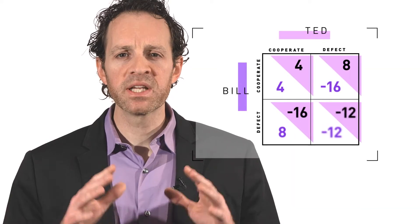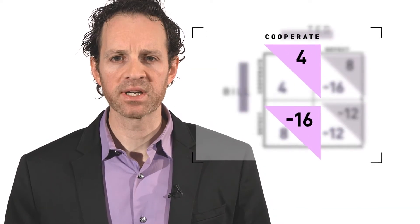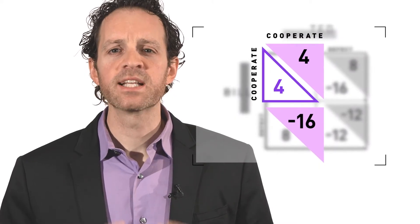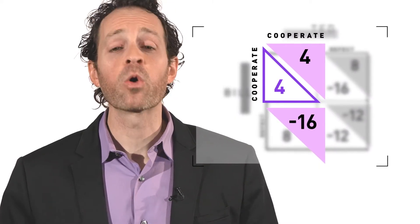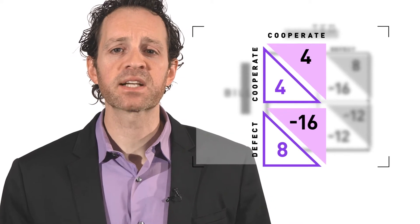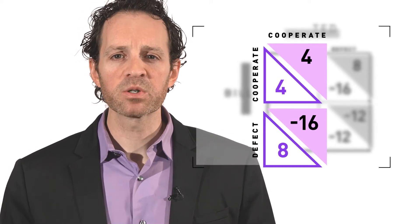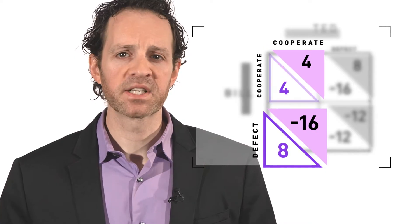Each suspect considers the payoffs associated with each of their potential strategies, and each player realizes that their best strategy is to defect and confess, no matter what the other player does. To understand why, consider the possible payoffs that Bill is facing. Bill doesn't know what Ted will do, but he knows that if Ted chooses to cooperate, then Bill's outcome could either be 4 — his payoff if he also cooperates — or 8, his payoff if he defects unilaterally. So in that case, Bill can see he's better off defecting unilaterally.